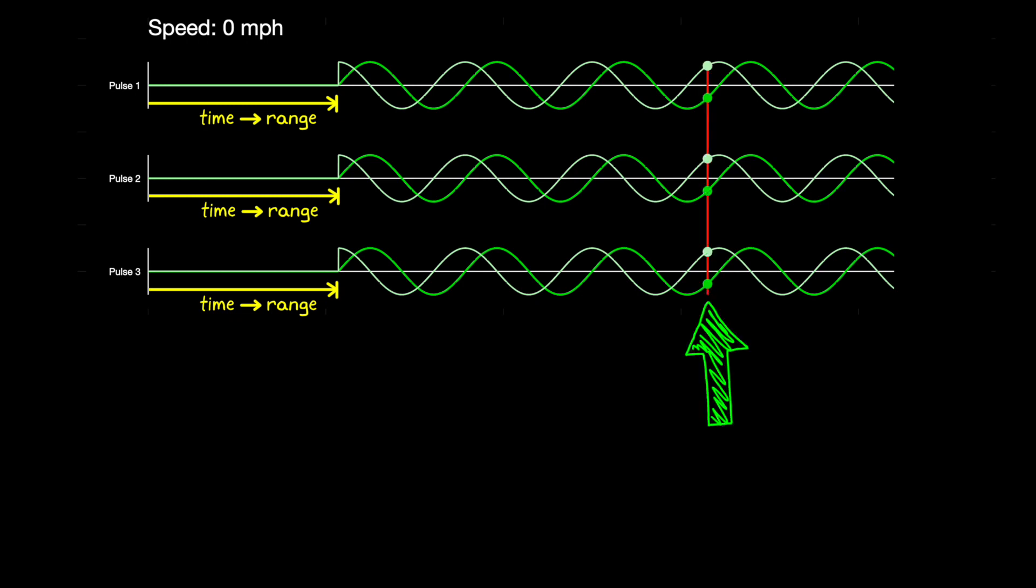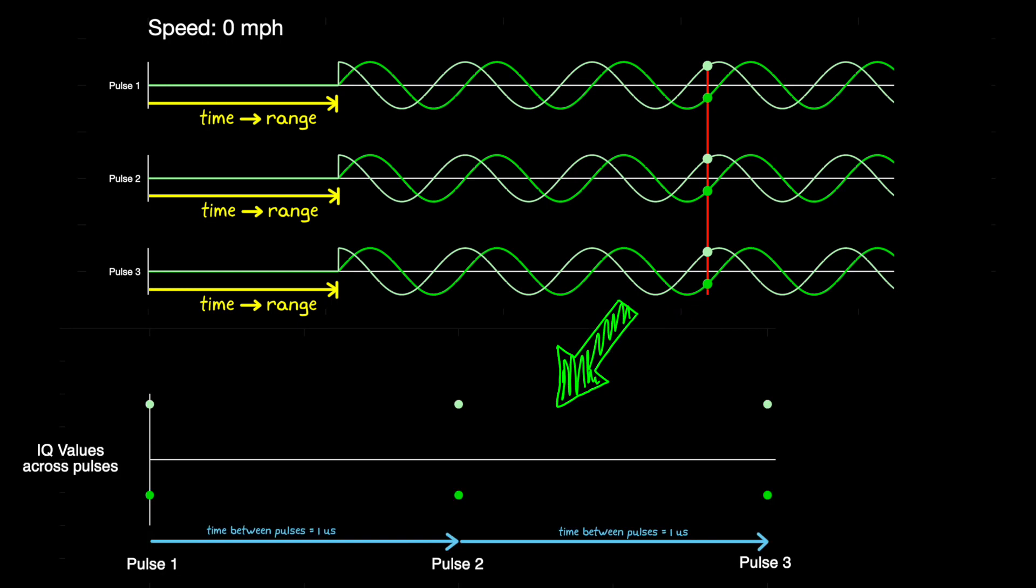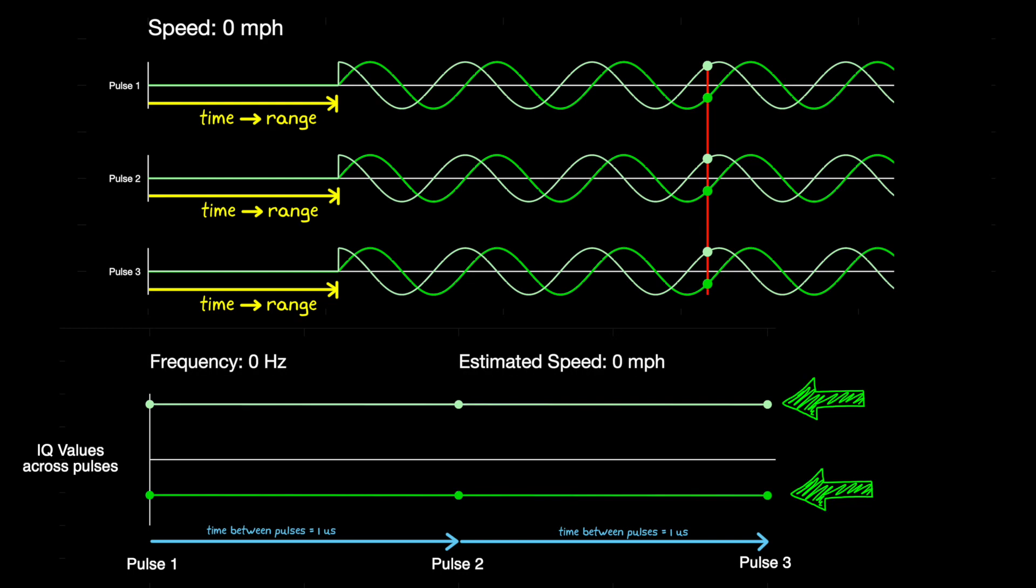And so, if we sampled the return pulses at the same time relative to when that pulse was transmitted, and plotted those measured IQ values, we would get something like this. We can now look at the frequency of this new signal to determine the velocity of the object. In this case, it's just two flat lines, and so the frequency is zero hertz, or zero miles per hour.